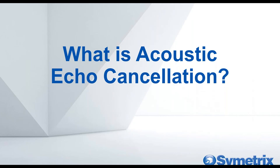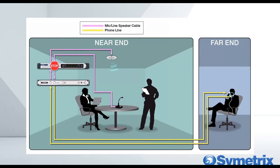So that is the problem. Acoustic echo cancellation, or AEC, basically prevents that unwanted signal from being transmitted back to the far end caller after it gets picked up by the near-end mics. The AEC removes unwanted material from the near-end mics by canceling it out against a reference signal. The reference signal is what gets removed by the AEC algorithm, preventing it from getting sent back to the far end.